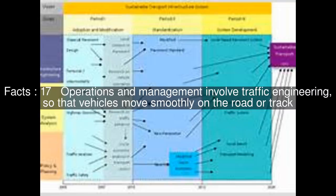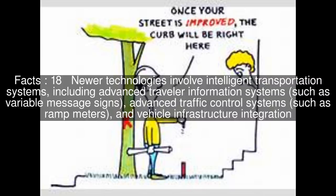Operations and management involve traffic engineering so that vehicles move smoothly on the road or track. Newer technologies involve intelligent transportation systems, including advanced traveler information systems such as variable message signs, advanced traffic control systems such as ramp meters, and vehicle infrastructure integration.